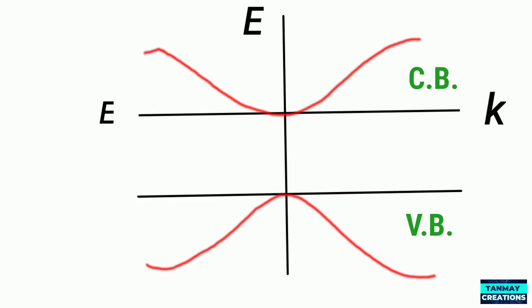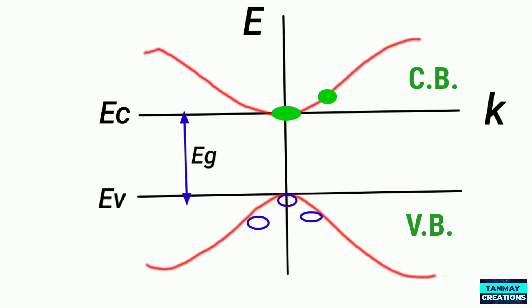This line represents the bottom of the conduction band and this line represents the top of the valence band. EG represents the forbidden energy band gap. A few hole states in blue color are indicated at the top of the valence band, and similarly a few electron states in green color are indicated at the bottom of the conduction band.